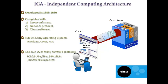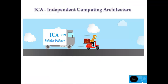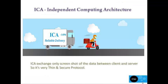ICA Protocol operates at the presentation layer of the OSI model, which prepares the received data to be presented in the application layer. ICA exchanges only screenshots of the data between the client and the server, so it is very thin and secure.